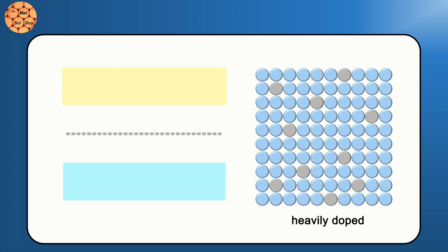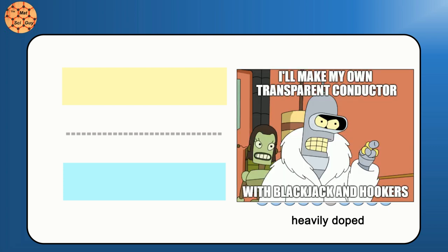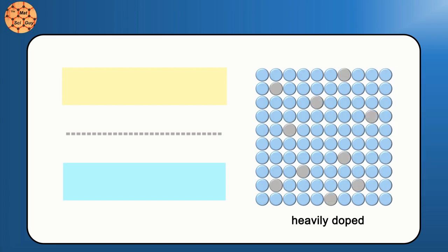ITO is essentially indium oxide that has been so heavily doped with tin that it becomes degenerate. Not that kind of degenerate. Degeneracy actually means that the Fermi level moved so much that it crossed into the band. Since the Fermi level, the water level for electrons, is in the conduction band, the electrons are now free to flow in a way that's almost metallic. There's no more gap they need to jump in order to move. This is the secret to what gives ITO its extremely good electrical conductivity.